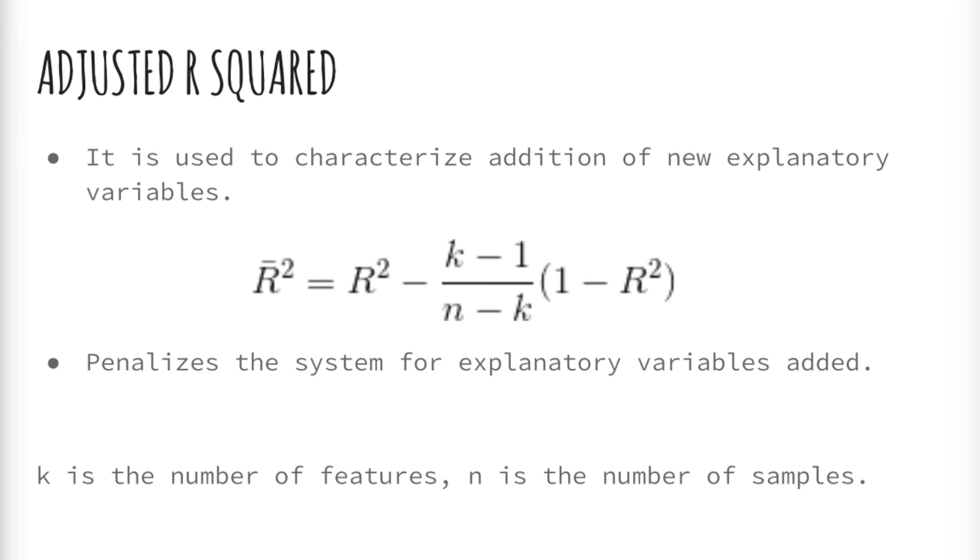Adjusted R-squared is another metric that builds up on the purpose of R-squared but penalizes the system for features added. Models with tons of predictors tend to perform better in sample than when tested out of sample. The adjusted R-squared penalizes you for adding extra predictor variables that don't improve the existing model. It is less than R-squared for more than one predictor variable.